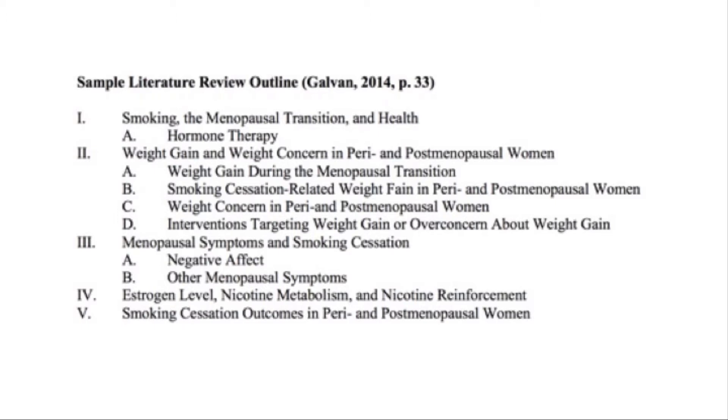Here's an example outline of a literature review created by Galvan based upon an article by McVeigh and Copeland. You can see how the literature review moves from broader topics of smoking, menopause, and health, to more specific issues of weight gain, to symptoms of menopause, and smoking cessation, to the final and very narrow point of smoking cessation research for women who are experiencing or have experienced menopause.